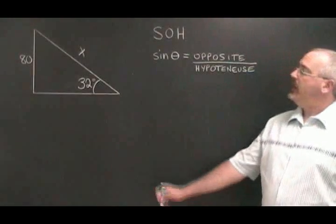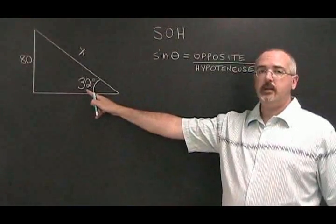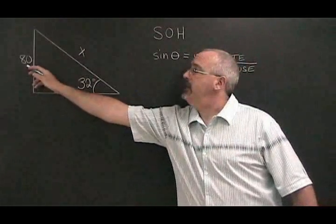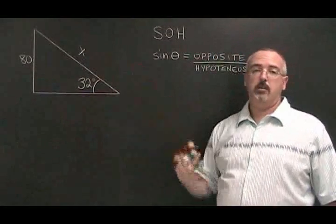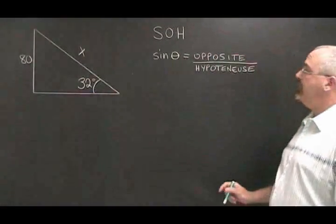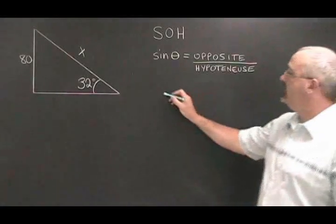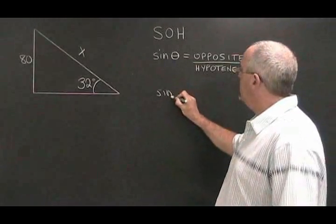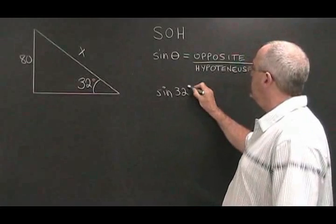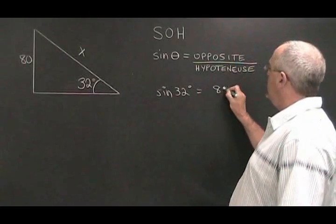In example 2, we have a 32 degree angle. The side opposite is equal to 80, and we want to know how long the hypotenuse is. We fill in our solve formula like this: sine of 32 degrees is equal to 80 over x.